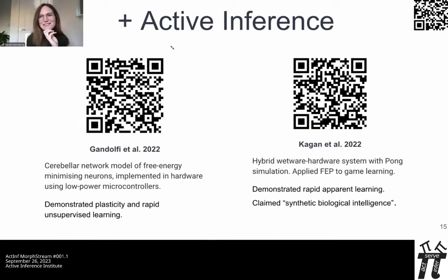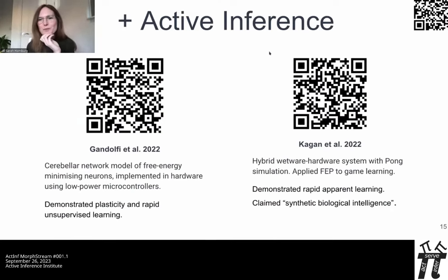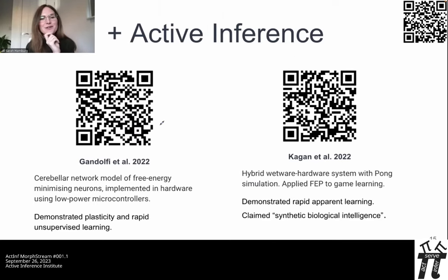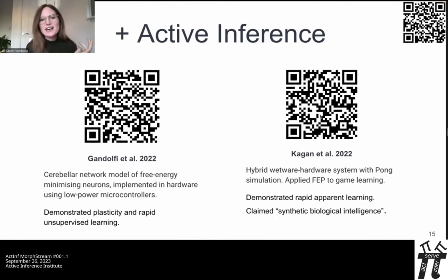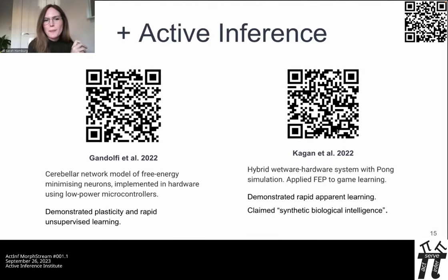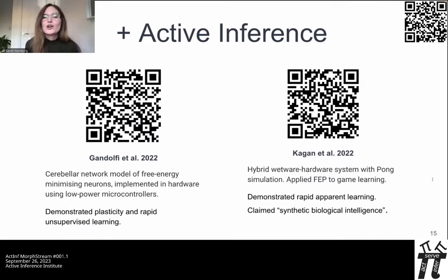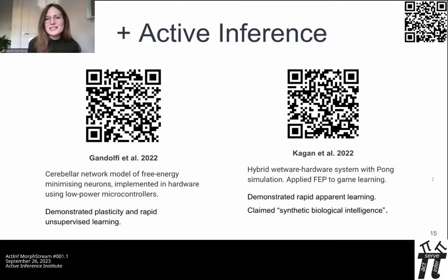If you're interested in active inference, a couple of recent studies have combined neuromorphic computing with principles of active inference. Active inference comes from neuroscience, and it lends itself very well to neuromorphic architectures. In a recent paper on embodied neuromorphic intelligence, it was suggested that a real breakthrough in neuromorphics will happen if the whole system design is based on biological computational principles, with a tight interplay between estimation of the surroundings and the robot's own state, decision making, planning, and action.